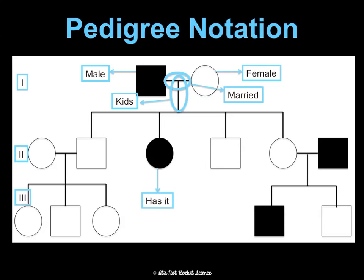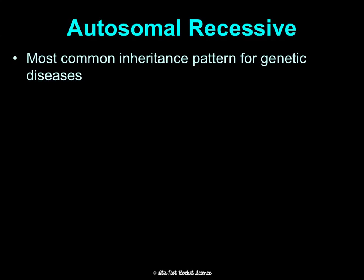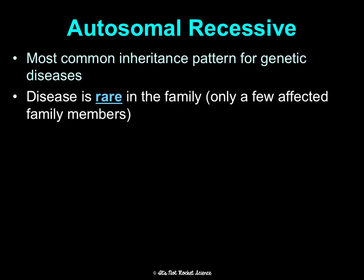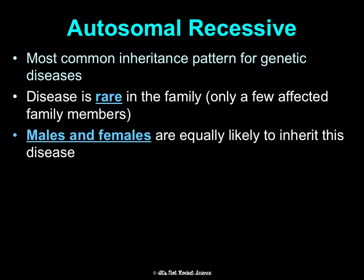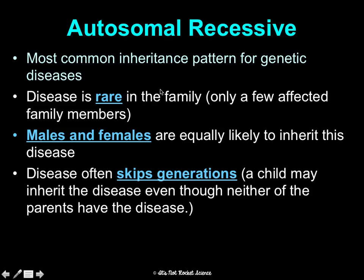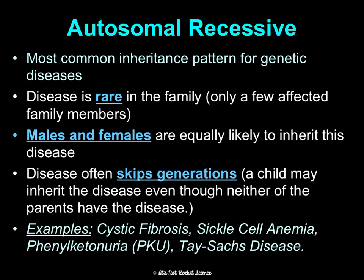Now we'll talk through patterns you can identify from pedigrees. For autosomal recessive, this is the most common inheritance pattern for genetic diseases. The disease appears rare in the family, males and females inherit it equally because it's autosomal, and it can often skip generations — a child can get the disease even if neither parent has it because they could be carriers. Examples are cystic fibrosis, sickle cell, PKU, and Tay-Sachs.